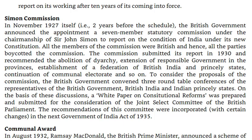Simon Commission. In November 1927, two years before the schedule, the British government announced the appointment of a seven-member statutory commission under the chairmanship of Sir John Simon to report on the condition of India under its new constitution. All the members of the commission were British, and hence all parties boycotted the commission. The commission submitted its report in 1930 and recommended the abolition of dyarchy, extension of responsible government in the provinces, establishment of a federation of British India and princely states, continuation of communal electorate and so on. To consider the proposals of the commission, the British government convened three roundtable conferences. On the basis of these discussions, a white paper on constitutional reforms was prepared and submitted for the consideration of the Joint Select Committee of the British Parliament. The recommendations of this committee were incorporated, with certain changes, in the Government of India Act of 1935.